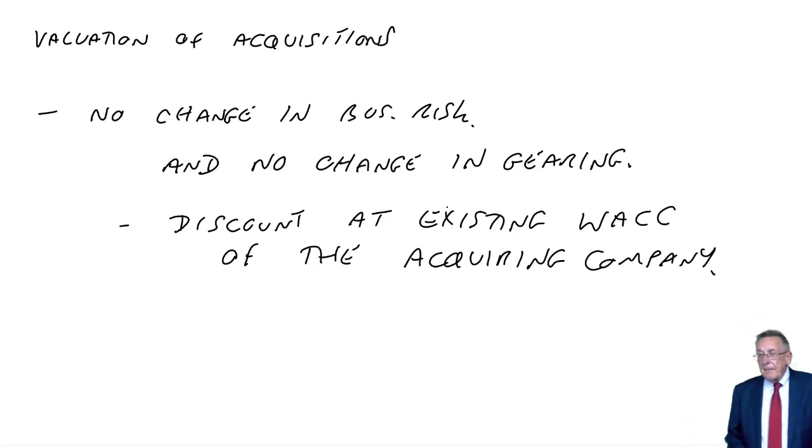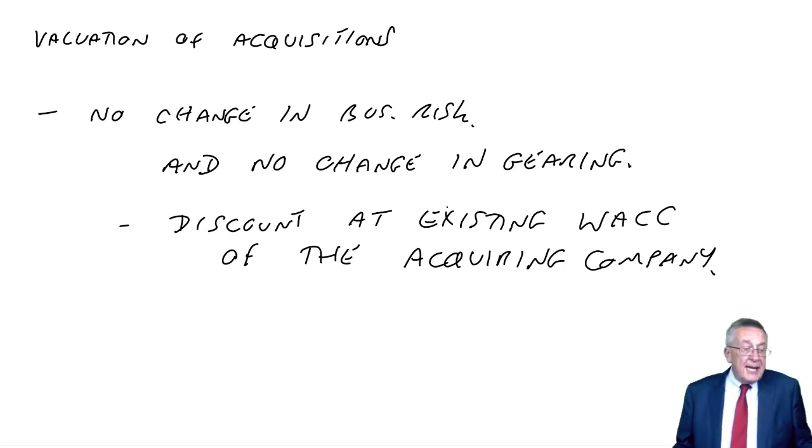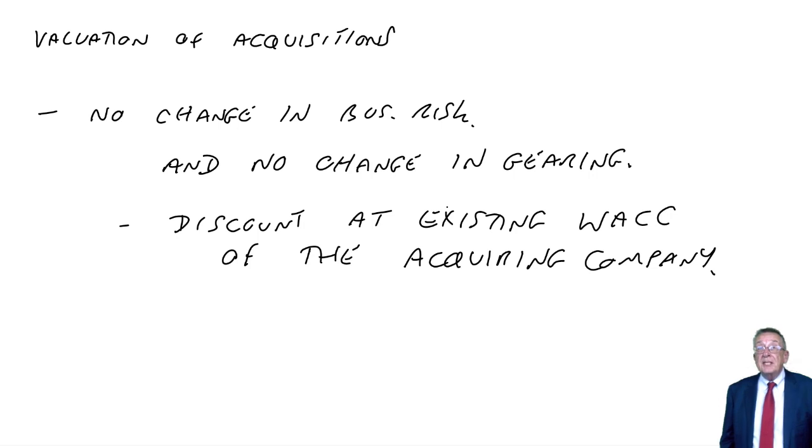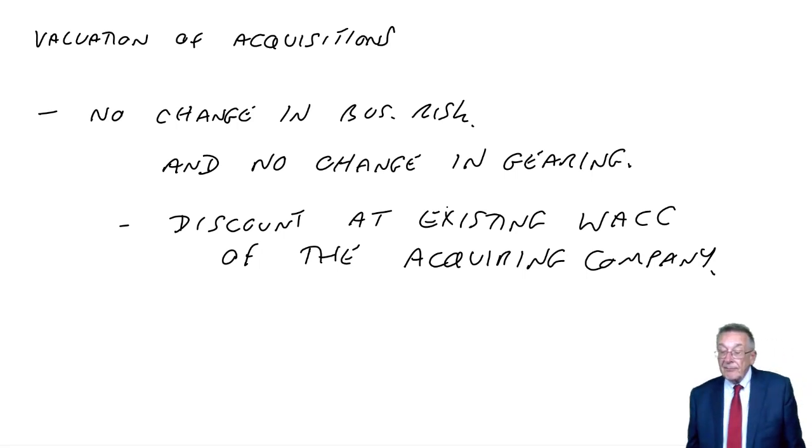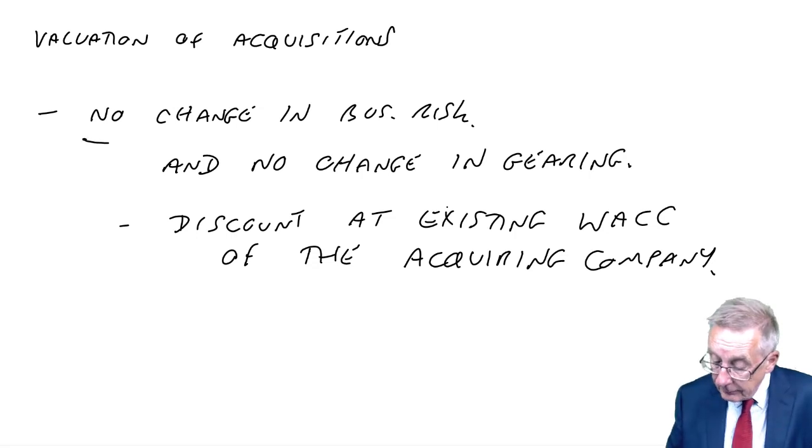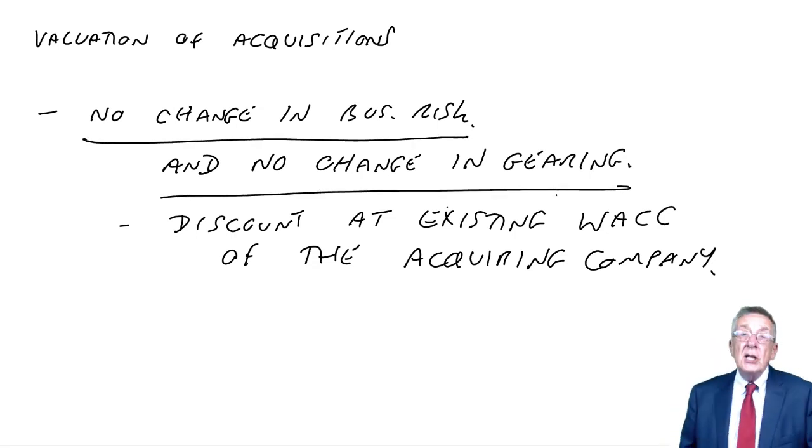You know, we're a shipbuilder, we're an oil company. The other company might not be an oil company, a different level of business risk. And maybe we're raising debt in order to finance the acquisition. The gearing changes. And I did say, when we revised calculations of weighted average, it was only valid provided no change in business risk, no change in gearing. So there's rule number one, but unlikely to be relevant.